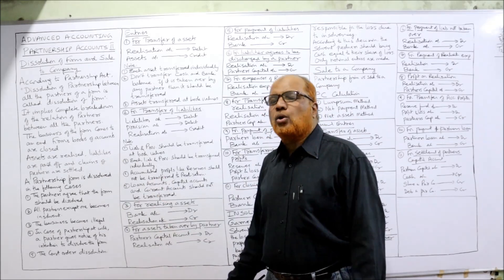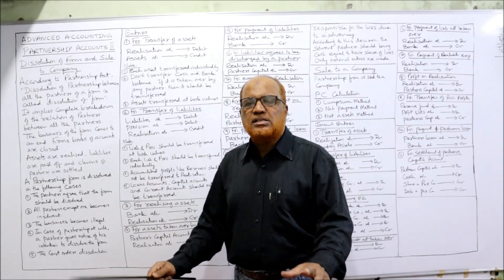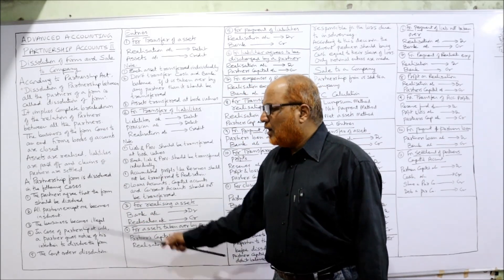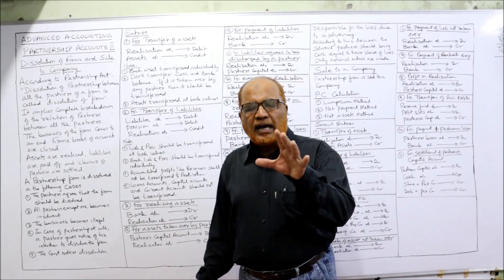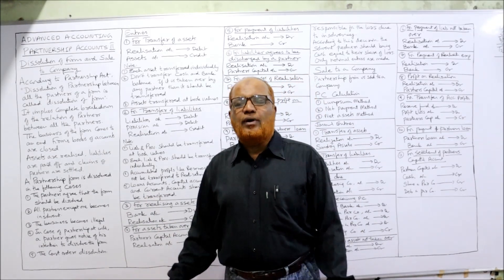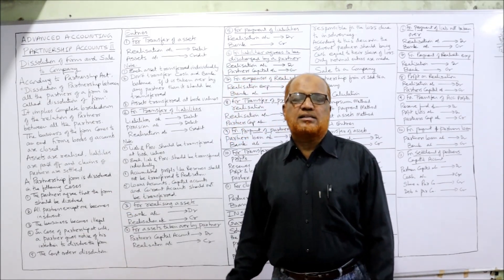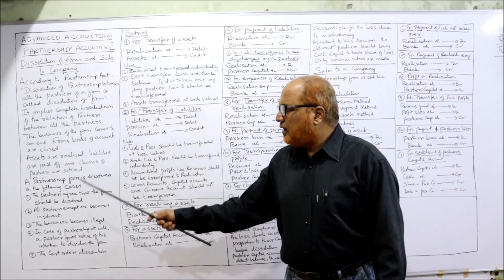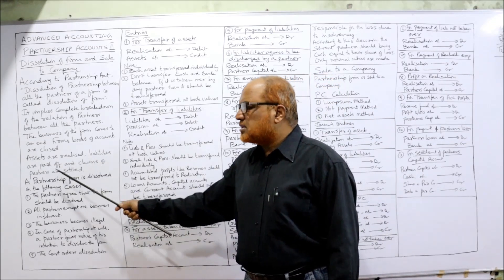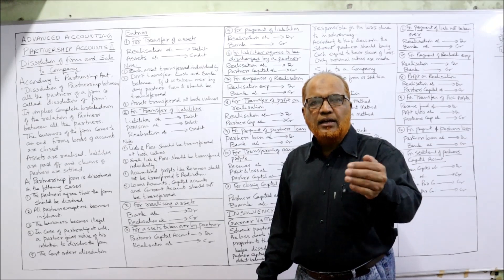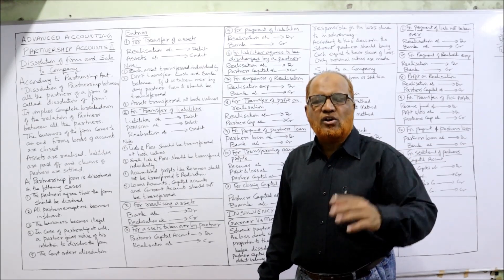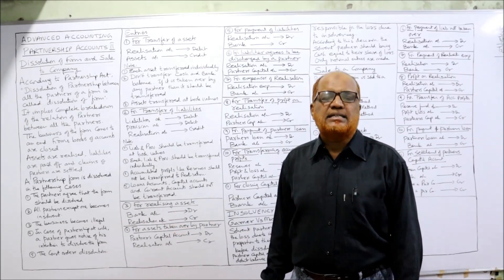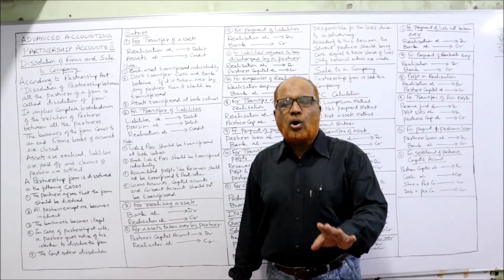The business of the firm comes to an end and the firm's books of accounts are closed. This is the meaning of the term dissolution of firm. At the time of dissolution, all the assets are realized — that means assets are sold away — and the liabilities are paid off from the money received. The accounts of the partners are then settled.